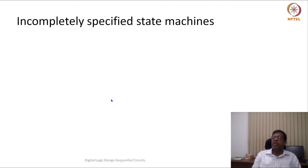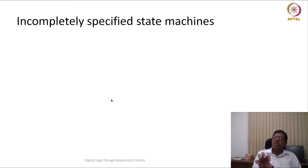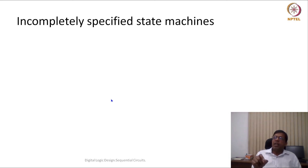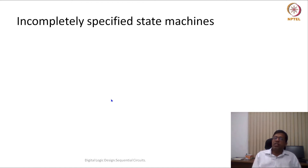In the previous lecture we were trying to design state machines. Whenever there was any state we were saying let us complete the state machine. When we said complete the state machine, it meant that for all possible inputs, let us see what would be the next state transition.